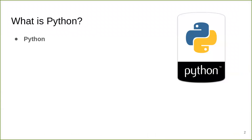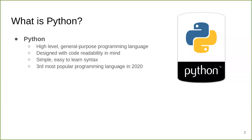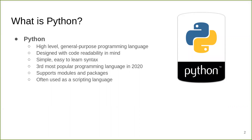Python is a high-level, general-purpose programming language designed with code readability in mind. Its simple, easy-to-learn syntax allows for rapid program development and debugging. These qualities make Python the third most popular programming language in 2020. Its popularity is partly due to its support for modules and packages that encourage code reuse and modularity. Python is often used as a scripting language that glues together different software components.